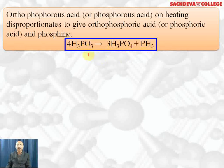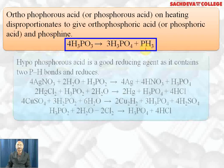This is called a disproportionation reaction because phosphorus is in the +3 oxidation state in H₃PO₃. It gets oxidized to +5 (in H₃PO₄) and gets reduced to −3 (in PH₃). That is why this reaction is called a disproportionation reaction.